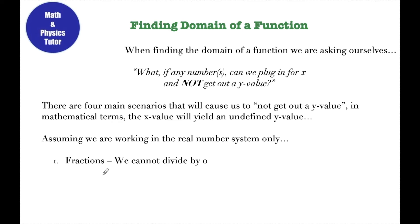Hey guys, today we're going to be talking about finding the domain of a function. When we find the domain of a function, we're essentially asking ourselves what, if any, numbers can we plug in for x and not get out a y value? If there are numbers that I can plug in for x and I get an unreal answer or just no answer at all, then I have to restrict my domain. There are four main scenarios that will cause us to not get out a y value or get an undefined value inside the function.